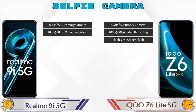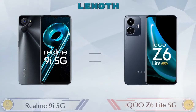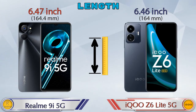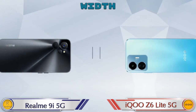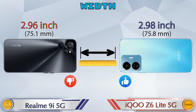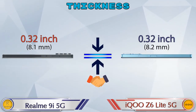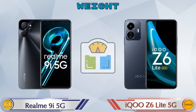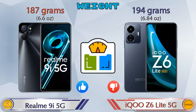Looking at dimensions, the Realme 9i 5G is 6.47 inches long and the Z6 Lite 5G is 6.46 inches — almost the same. Width is 2.96 inches for the 9i 5G and 2.98 inches for the Z6 Lite 5G. Both phones share the same 0.32-inch thickness. The 9i 5G weighs 187 grams while the Z6 Lite 5G is heavier at 194 grams.